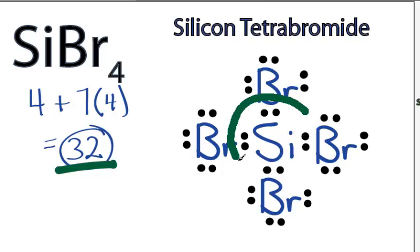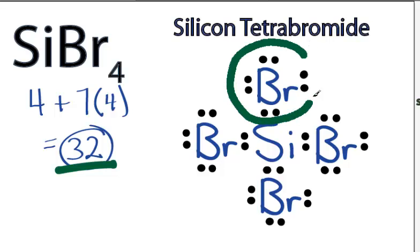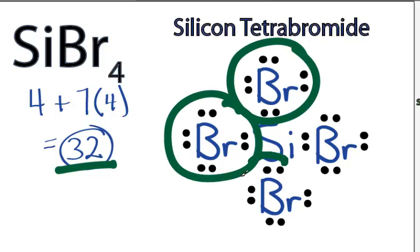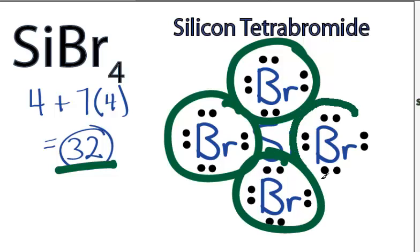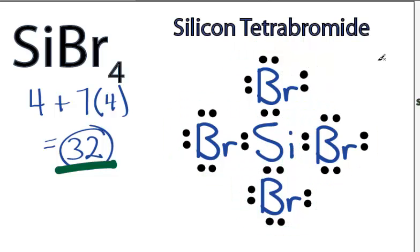So we've used all 32 valence electrons. Our silicon in the center has 8 valence electrons, and each of the bromines have 8 electrons, so their octets are full as well. We've filled the octets on each of the atoms in the SiBr₄ Lewis structure. That's the Lewis structure for SiBr₄.